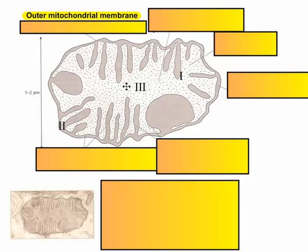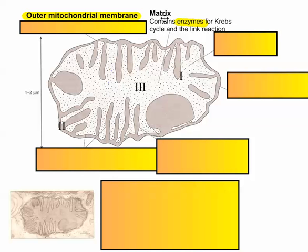Here we have mitochondria. This is easy for me to remember because I love Keanu Reeves — the matrix is where he lives. So this middle part, the matrix, is where the link reaction and the Krebs cycle happen, and there are lots of enzymes there for all of that to happen. Each of those different steps of the Krebs cycle requires